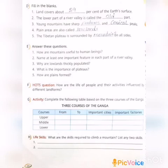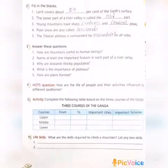Fifth question: The Tibetan plateau is surrounded by blank on all sides. Answer is Mountains.